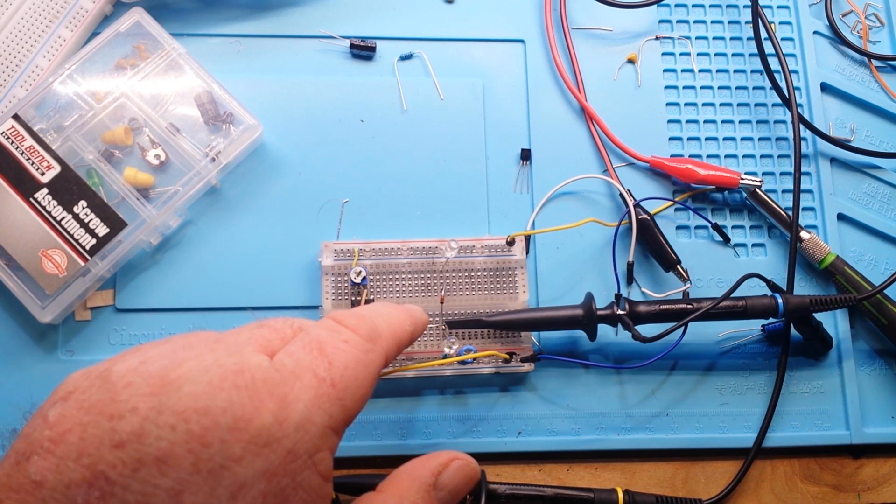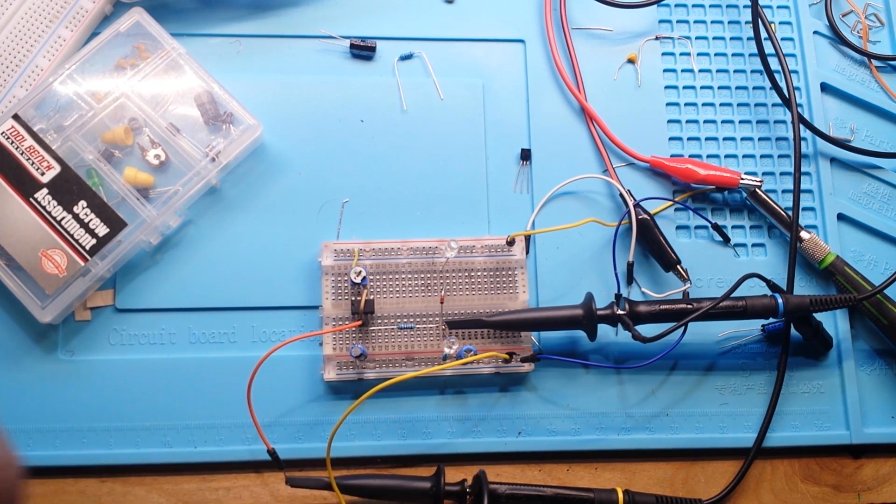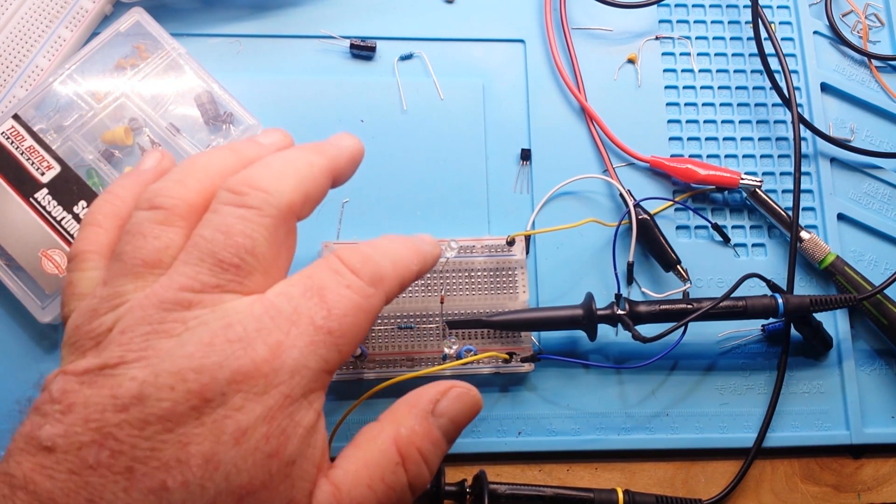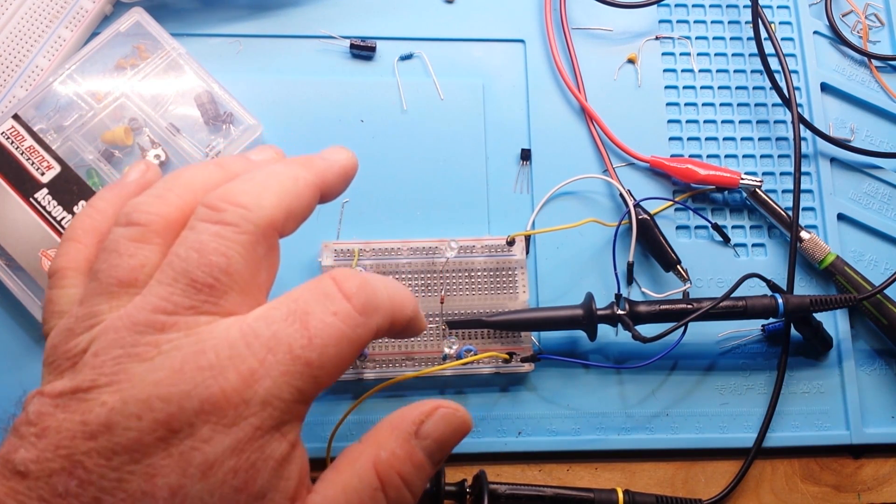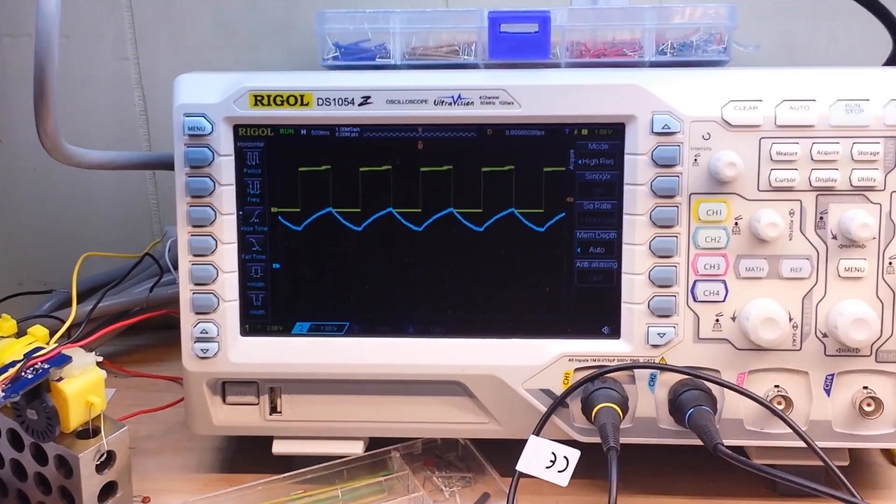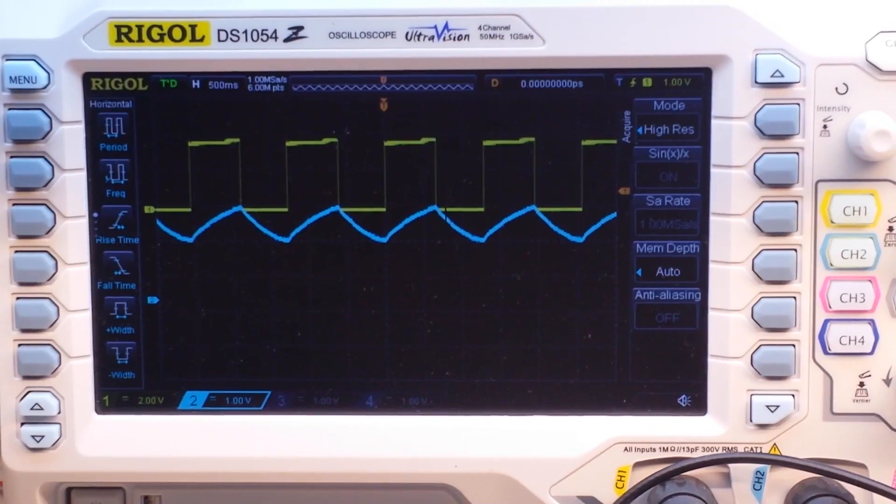A resistor going into a capacitor. We've basically created another low pass filter, which takes our hard and heavy on and off of the output of that 555 timer and turns it into something much smoother, something that begins to approximate a sine wave.